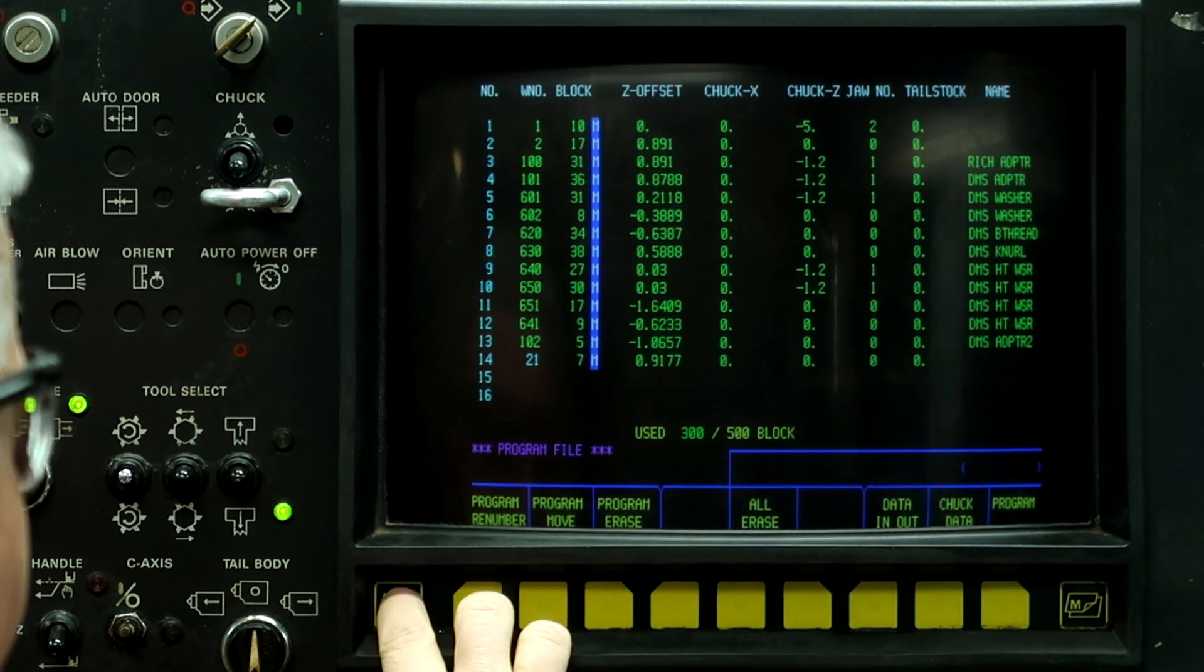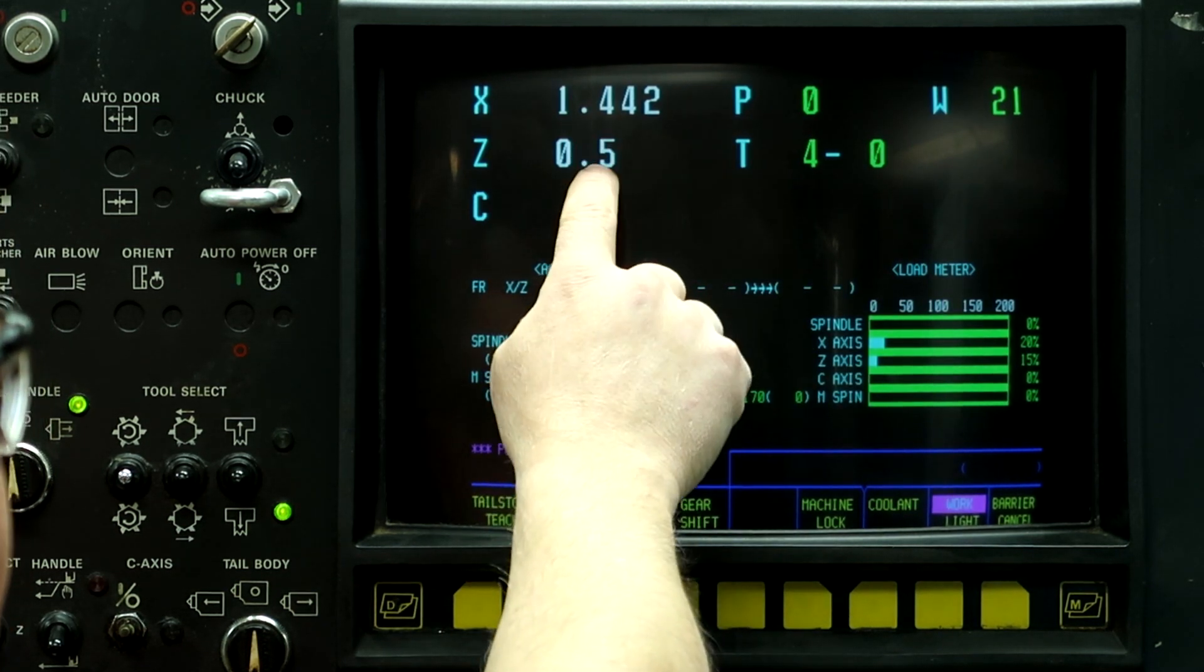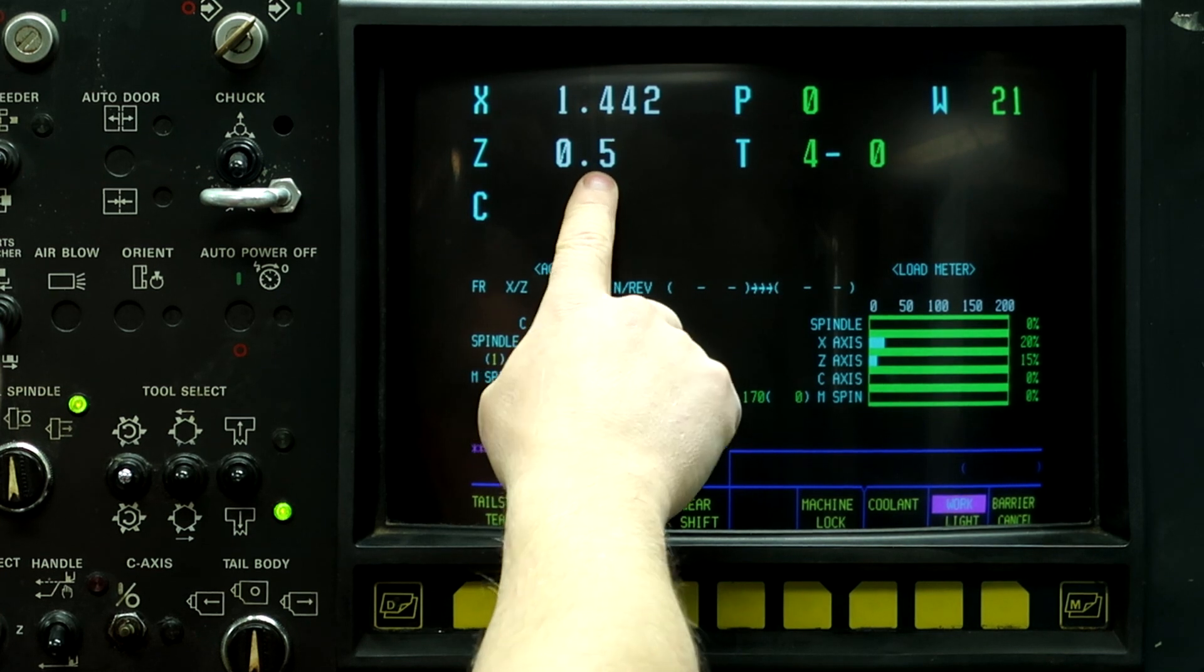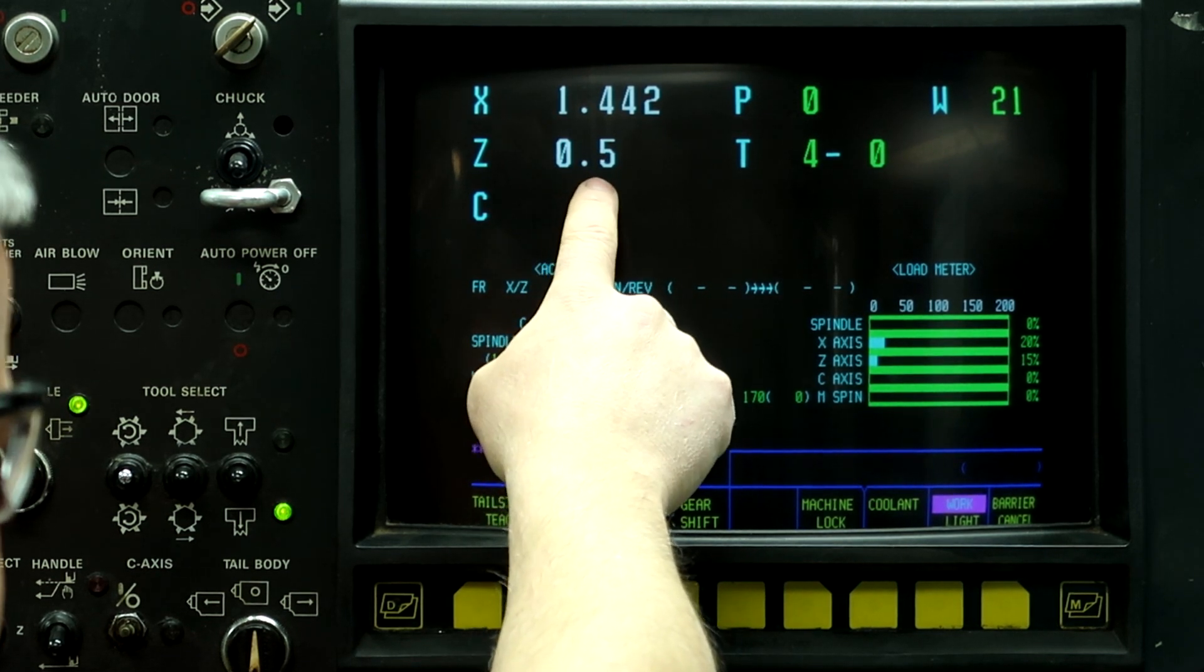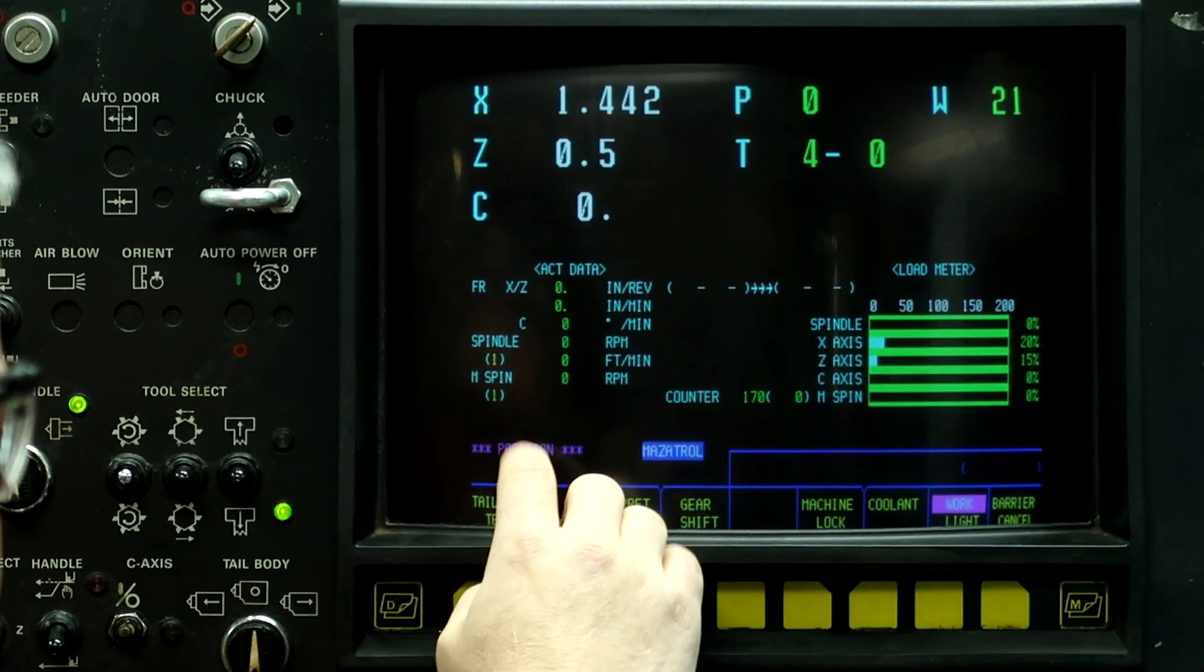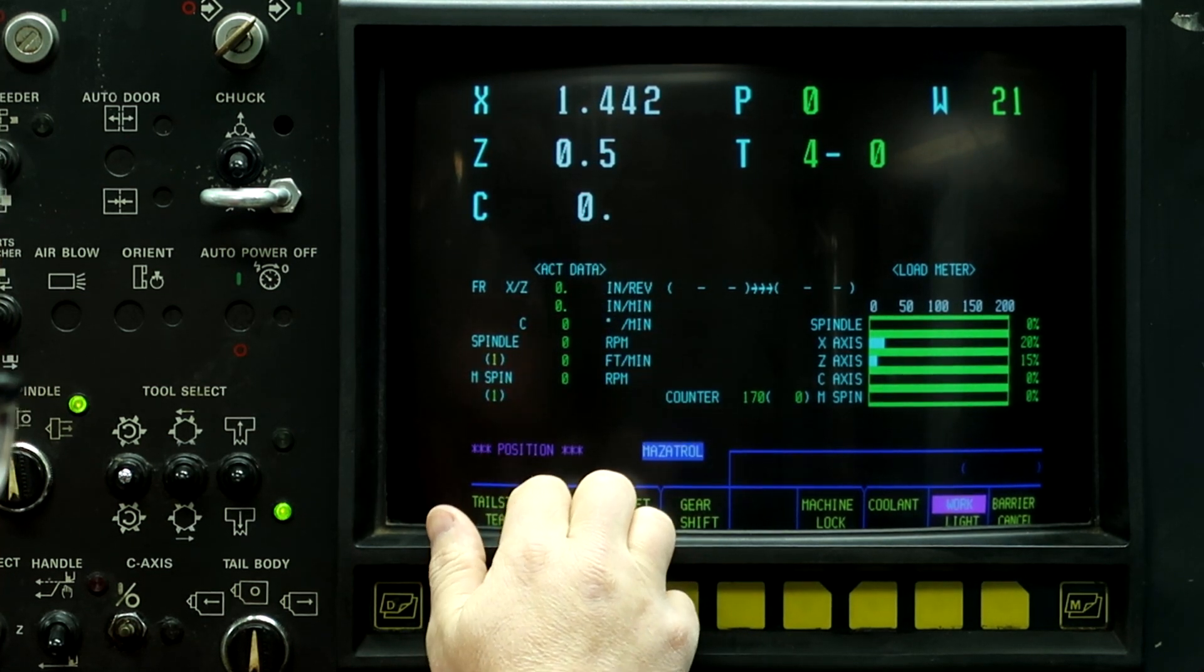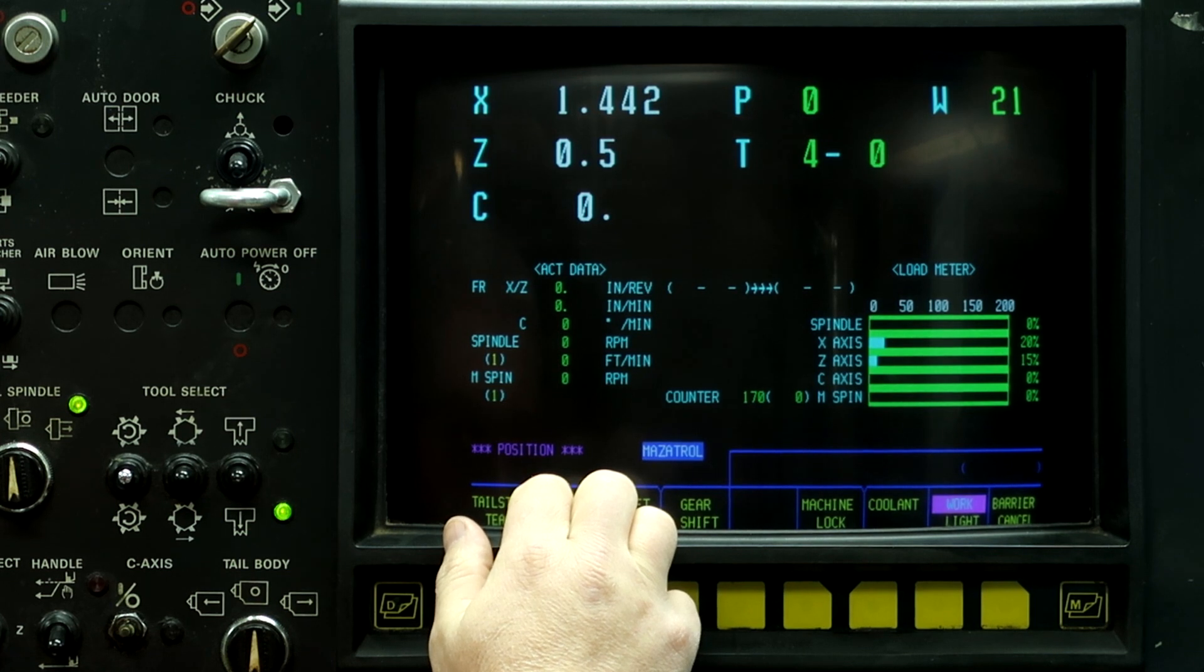And then after you do it, go back to the position screen and the position screen will tell you if you did it correctly or not. If the position screen shows a different number than what you expected, then you have to redo your steps. And that's how to set tools without using the tool probe.